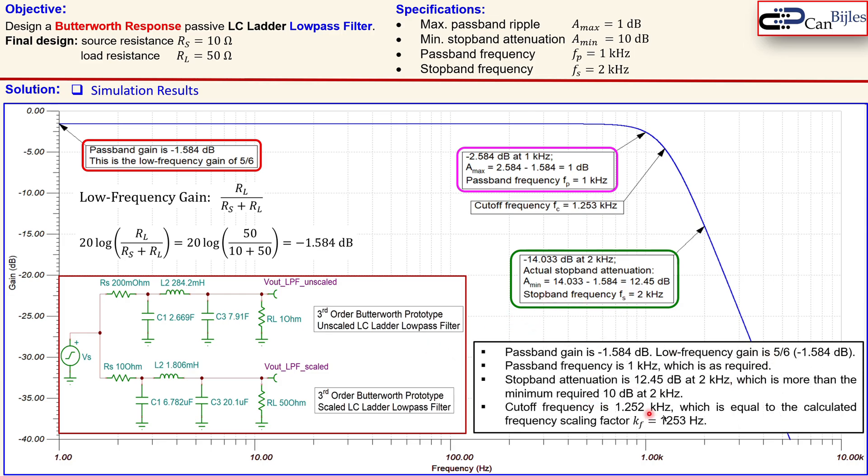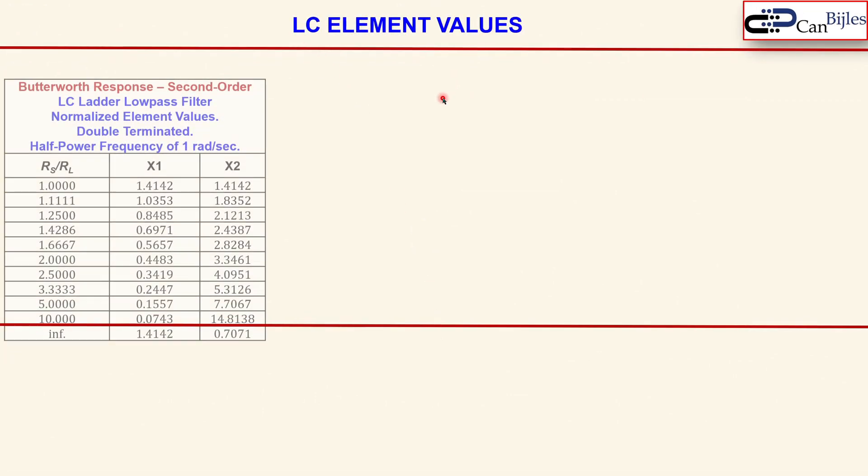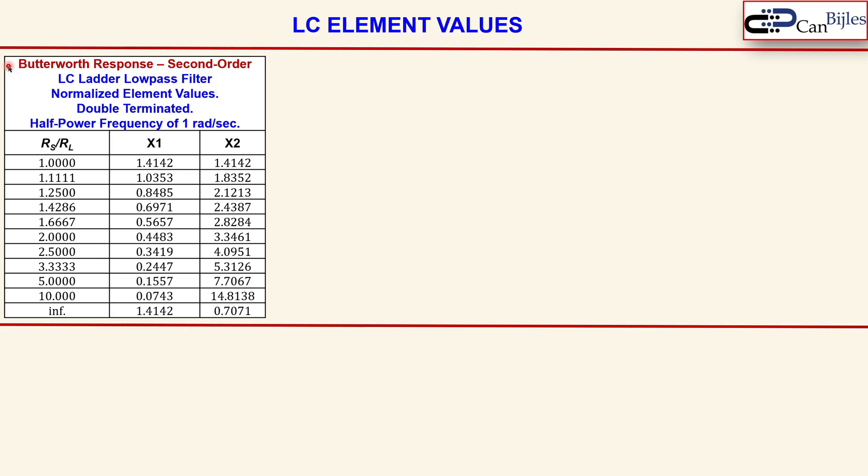In summary, we can also give the element values for the LC ladder filter configuration. This is for the second order for the Butterworth response.